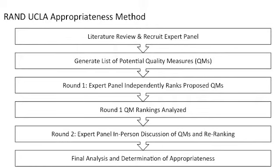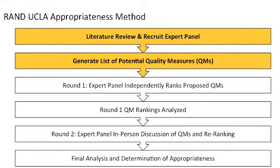In this process, we utilized the RAND-UCLA appropriateness method, which I'll refer to as RAM moving forward. RAM is a well-described method that's been used to develop quality of care measures across a wide variety of disciplines. First, we performed a literature review and generated a list of 26 potential quality measures. At the same time, we recruited an expert panel by inviting 15 esophageal experts from across the nation, consisting of gastroenterologists and GI surgeons. In the end, 14 accepted and participated in the entire process.